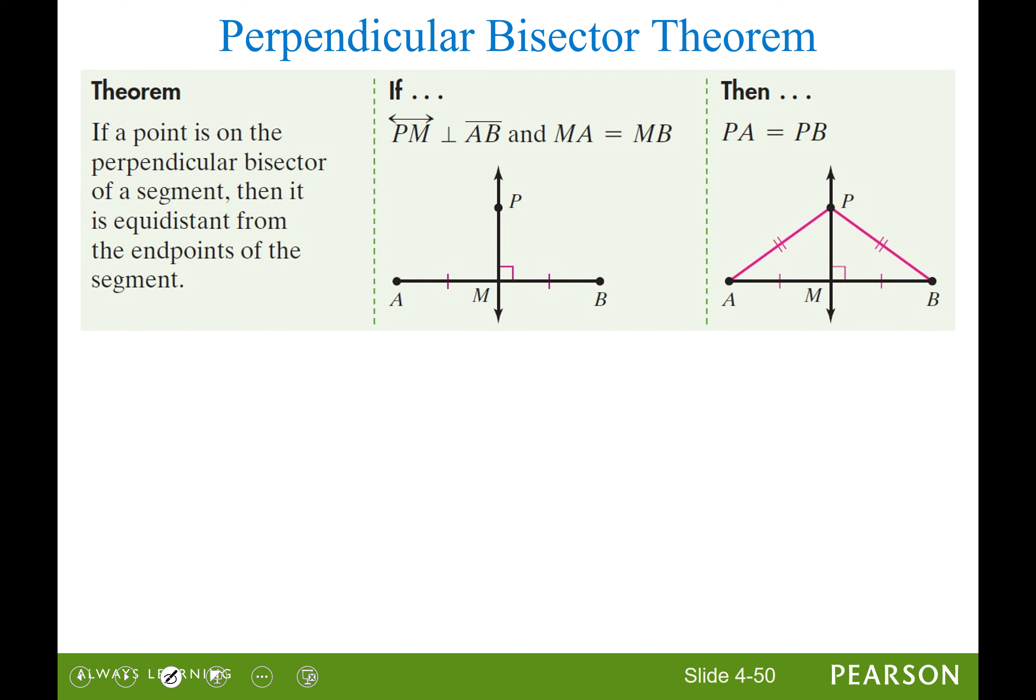Perpendicular bisector theorem: if we do have perpendicular line segments and we have that the measure from M to A is equal to the measure from M to B, then we can take a point P wherever P is, connect from A to P and B to P and we have constructed an isosceles triangle with two congruent sides. We know that the base is cut into two congruent parts.